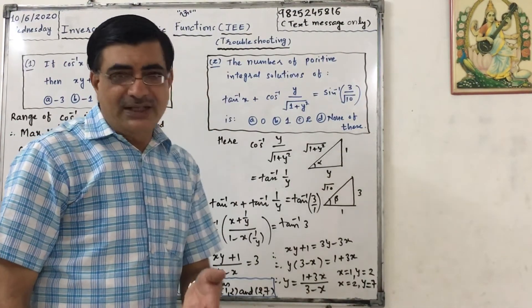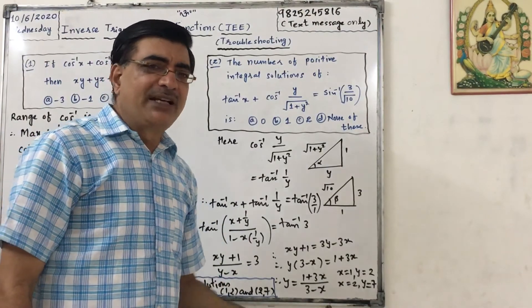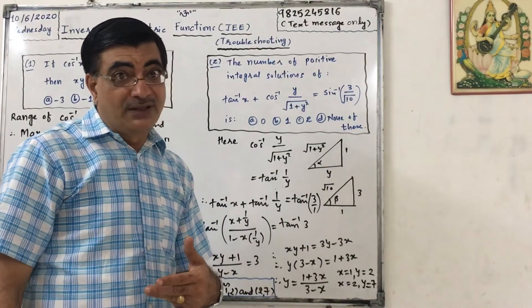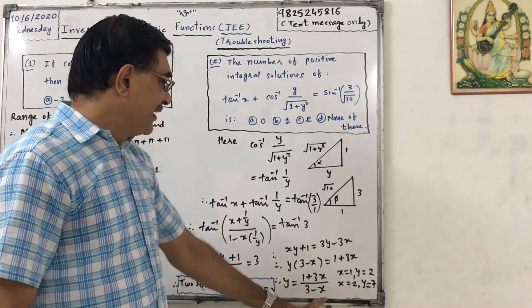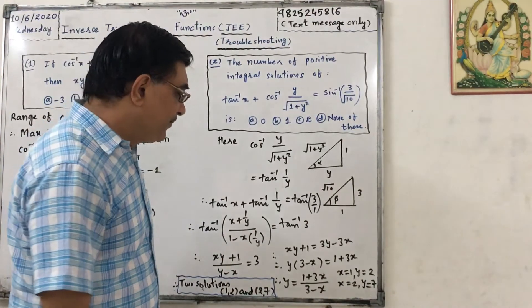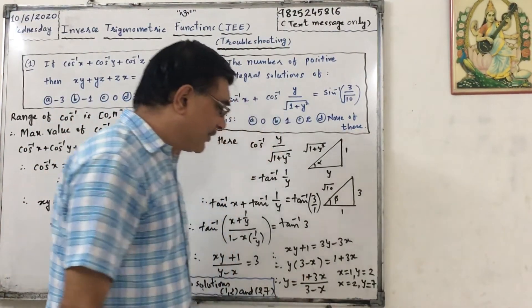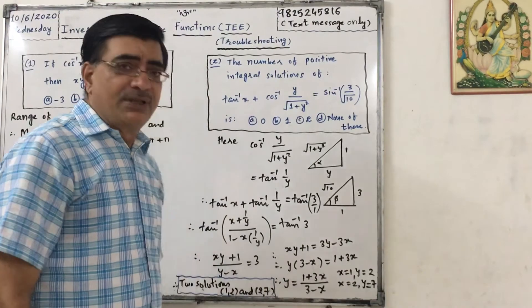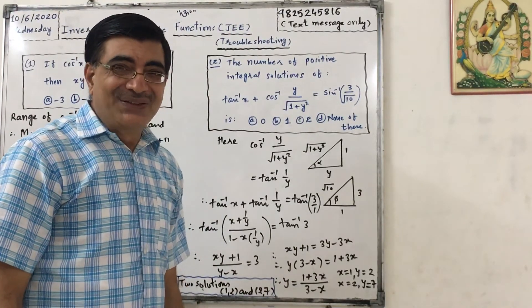We cannot take 3. Okay, and if we take 4 it will be negative. But we need positive integral solution. So considering x equals to, see if we take x equals to 0 what will happen, 1 by 3. But that is not integral solution. Okay, so take x equals to 1.